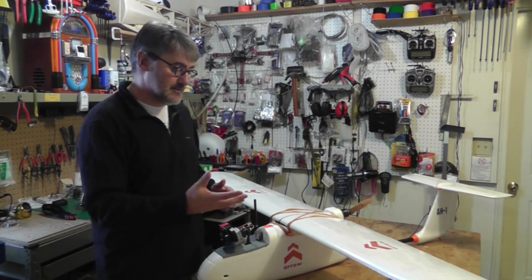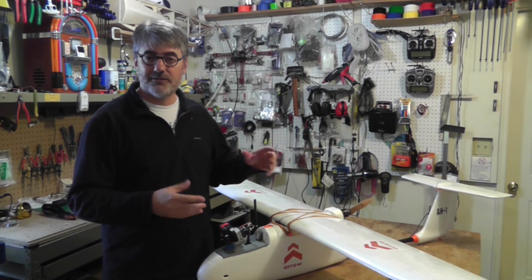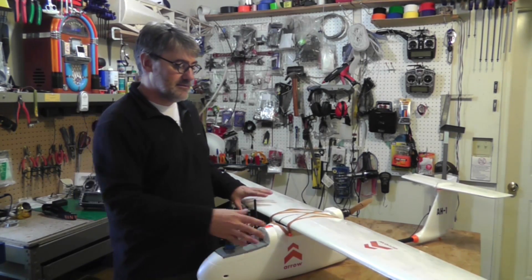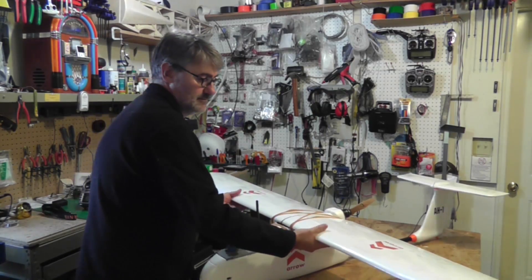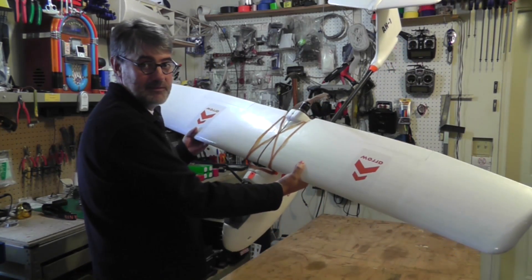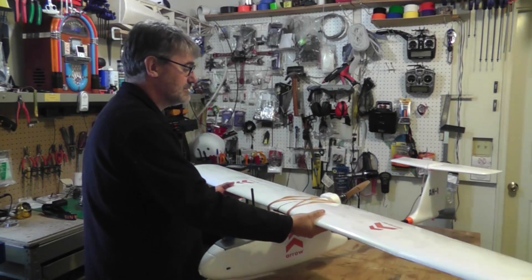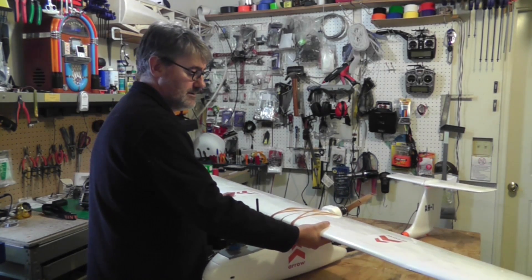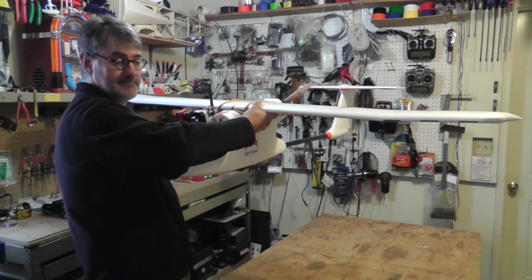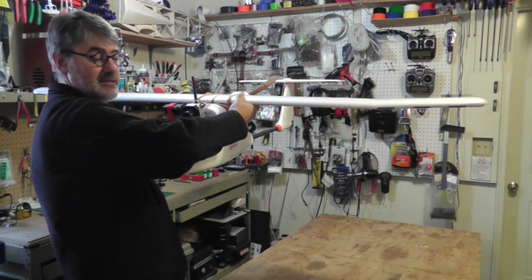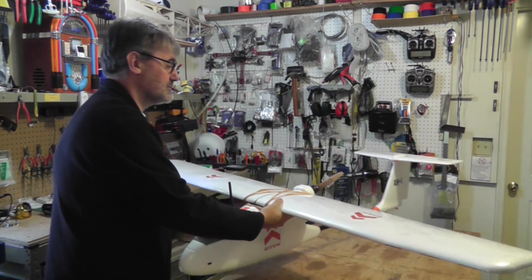The other big difference between this and the regular 2014 Skywalker is that although it is about the same wing surface, so the wing chord and everything is about the same as the 2014 wing, they did put a little bit of a dihedral in the wing. You can see that there is a slight dihedral towards the wing tips.